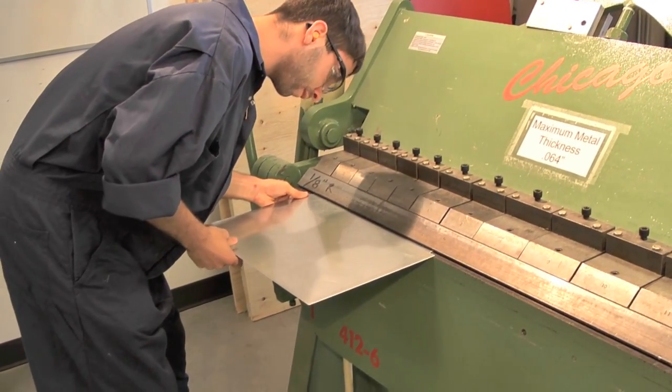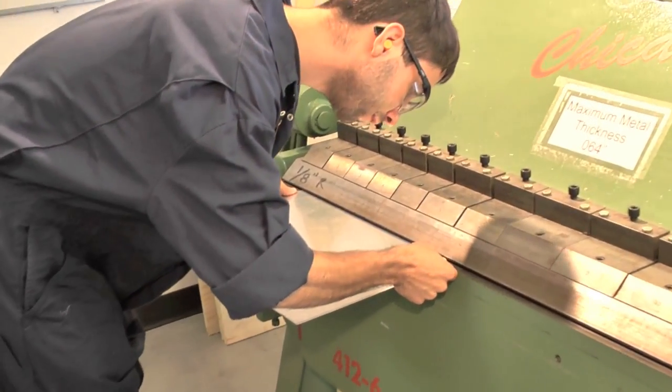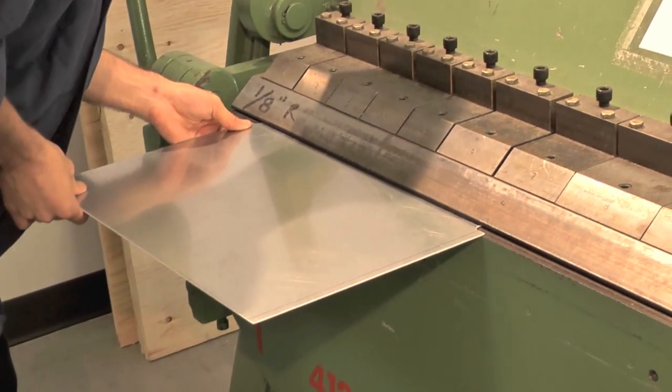Use the sight line to accurately position the material in the bending brake. Clamp and bend.